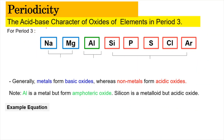For the next part, we look at the acid-base character of oxides of elements in period 3: sodium, magnesium, aluminum, silicon, phosphorus, sulfur, chlorine, and argon. Each metal and non-metal here has its own character in terms of acid-base properties. Group 1 and group 2 are alkali metals and alkaline earth metals respectively. When these metals combine with oxygen and dissolve in water, they form basic oxides. Meanwhile, for aluminum, it shows a distinctive acid-base character — it is an amphoteric oxide.